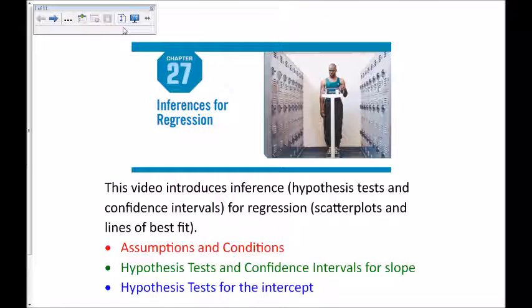This is the very last video for AP Statistics, so congratulations for making it this far. This video will talk about Chapter 27, and we'll talk about inferences, meaning hypothesis tests and confidence intervals for regression, meaning scatter plots and lines of best fit. We'll talk about assumptions and conditions, and we'll talk about some hypothesis tests and confidence intervals for the slope and for the intercept.